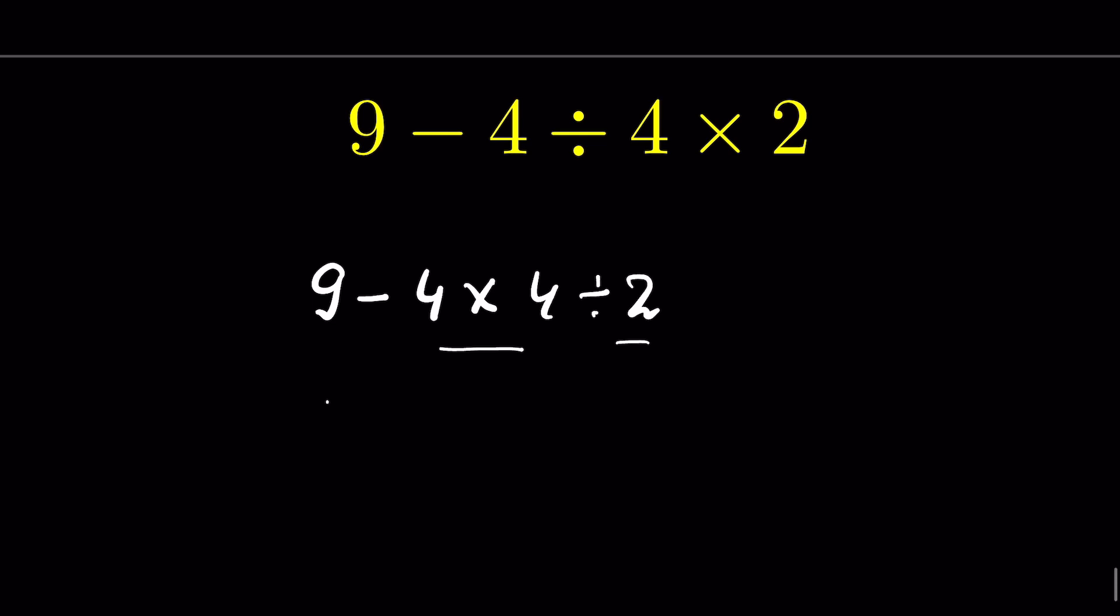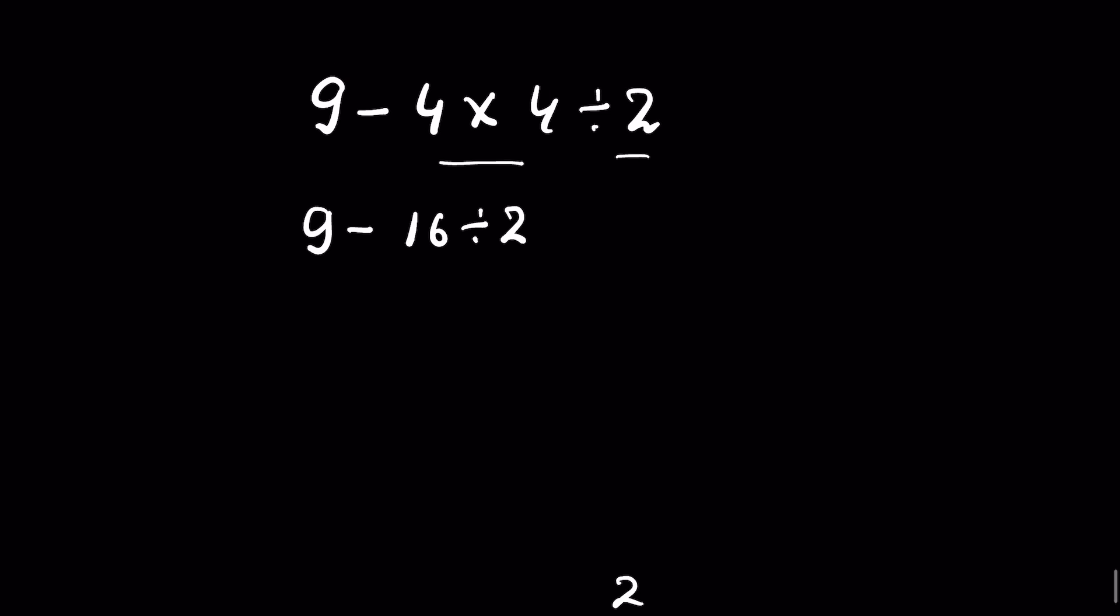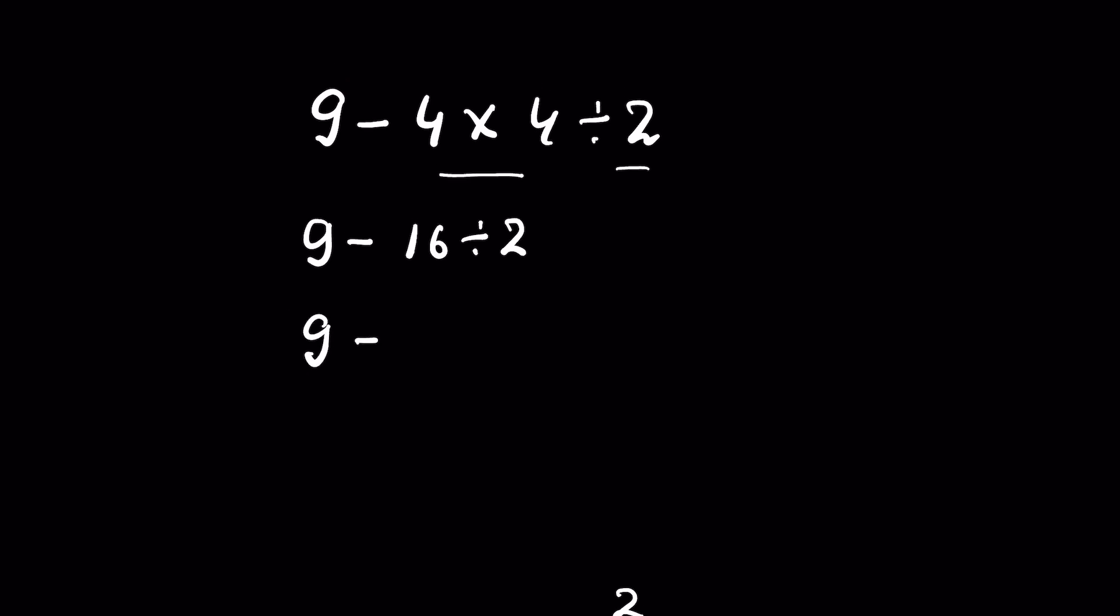When you do multiplication first, it is 9 minus 16 divided by 2, and you get 9 minus 8 (since 16 divided by 2 is 8), which equals 1.